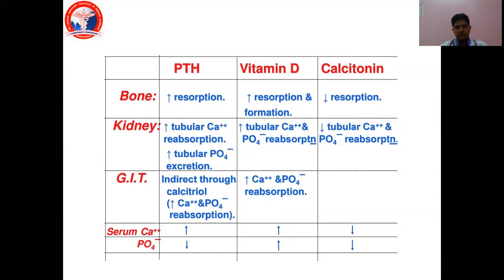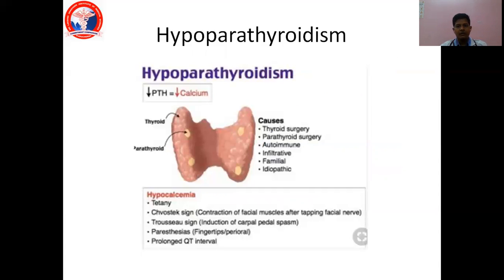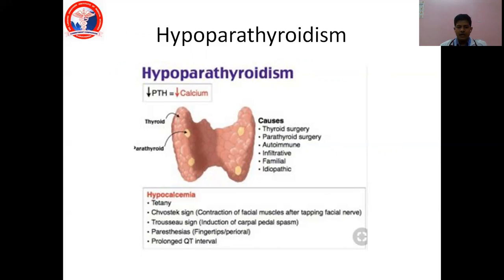Now let us go into the disorders of parathyroidism, starting with hypoparathyroidism. The most important cause is thyroid surgery where parathyroid glands are removed along with the thyroid. Also in parathyroid surgeries, autoimmune diseases may destroy the parathyroid gland, as may infiltrative diseases. There can also be familial and genetic forms of hypoparathyroid disease, and in some cases the cause is unknown — idiopathic.